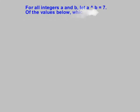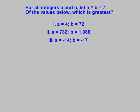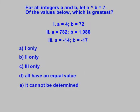This made-up function gives us, for all integers a and b, let a arrow up b equals 7. Of the values below, which is greatest? Then we're given the choices.